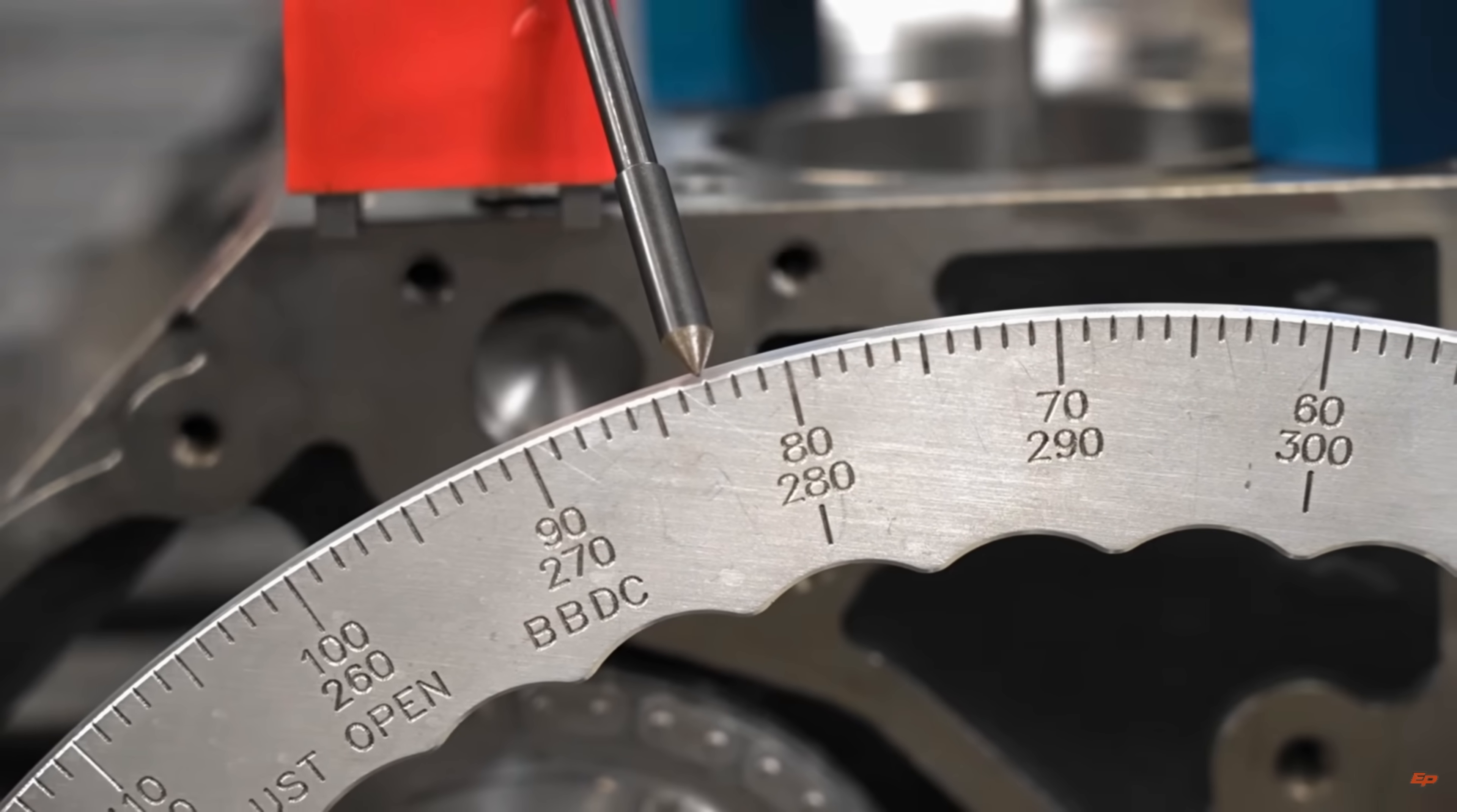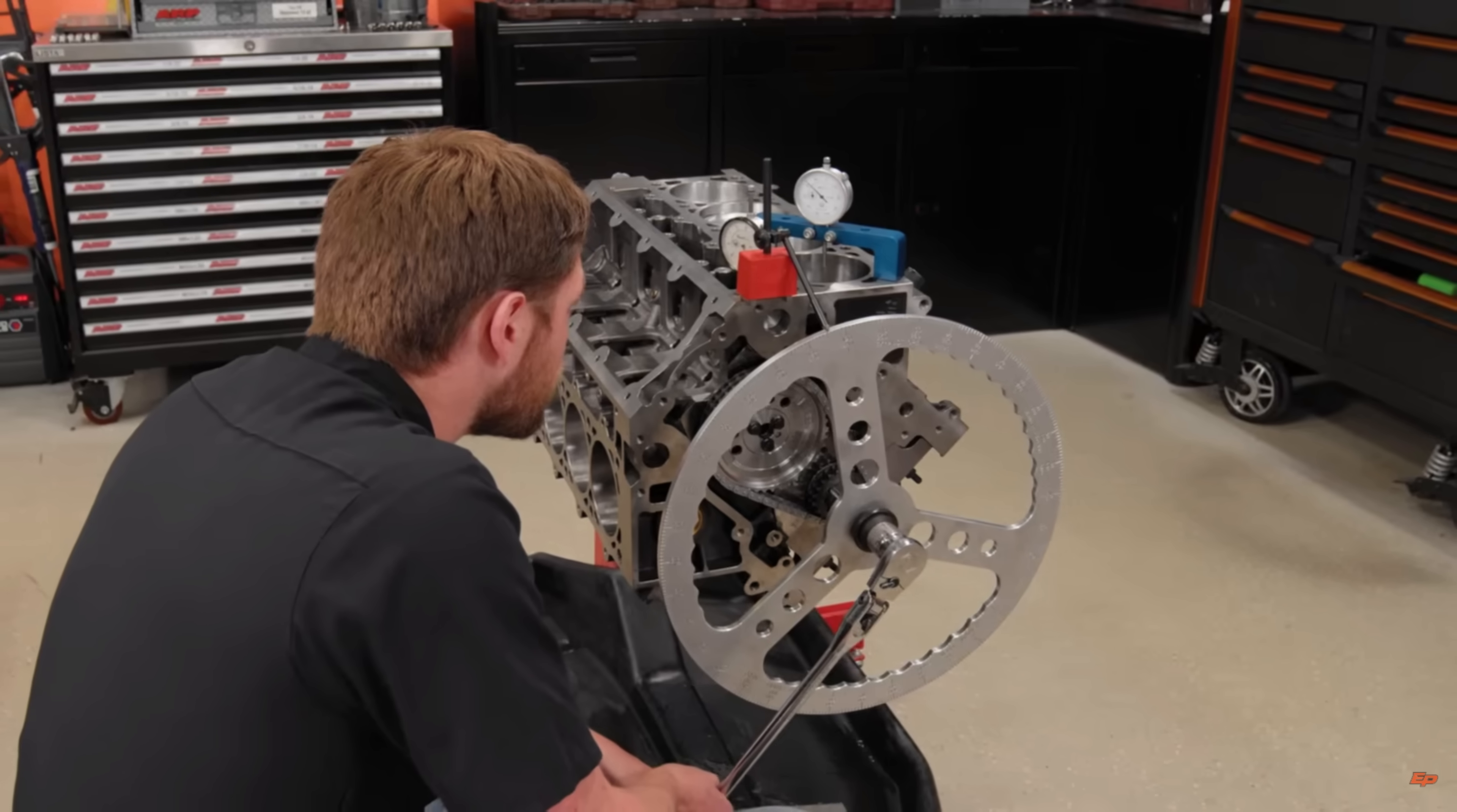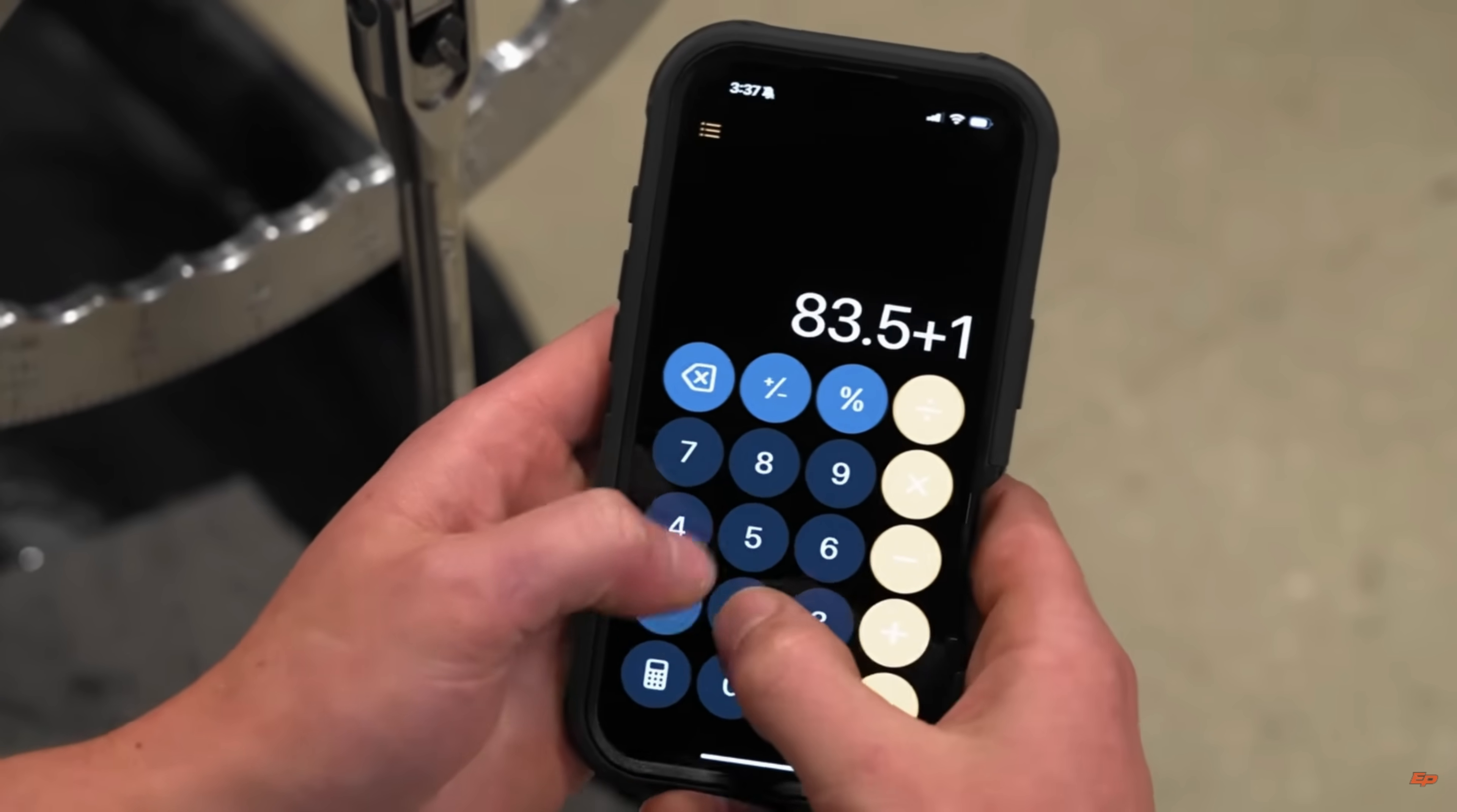To measure the camshaft's position relative to the crankshaft, we'll set up our degree wheel and check the intake lobe centerline before setting it right where we want, 105.75 degrees, which is 10.25 degrees advanced for this mild street application.